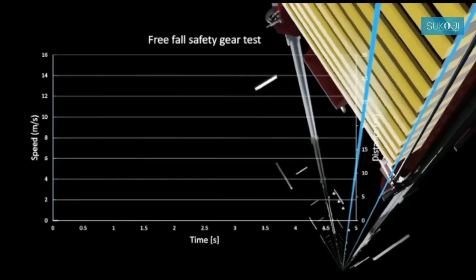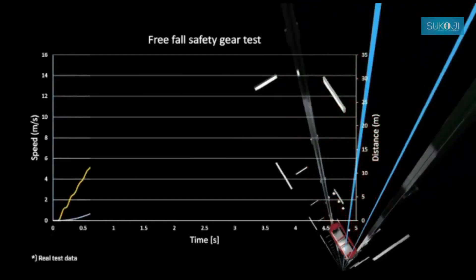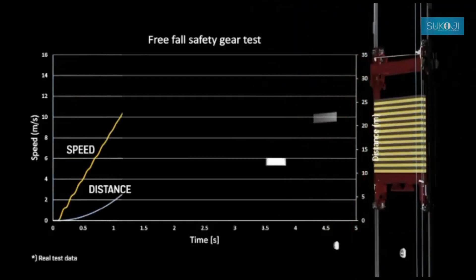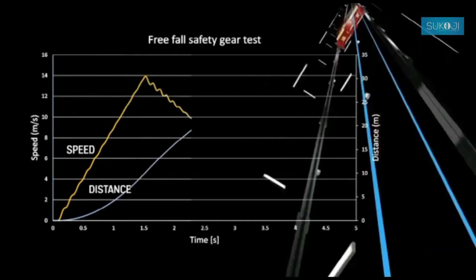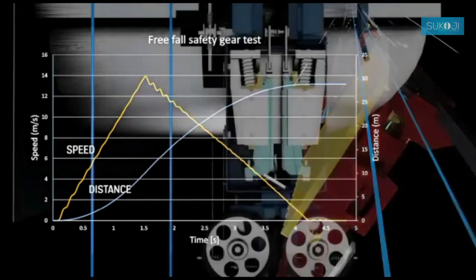Safeties are braking systems on the elevator car that grab onto the rails running up and down the elevator shaft. Some safeties clamp the rails, while others drive a wedge into notches in the rails.